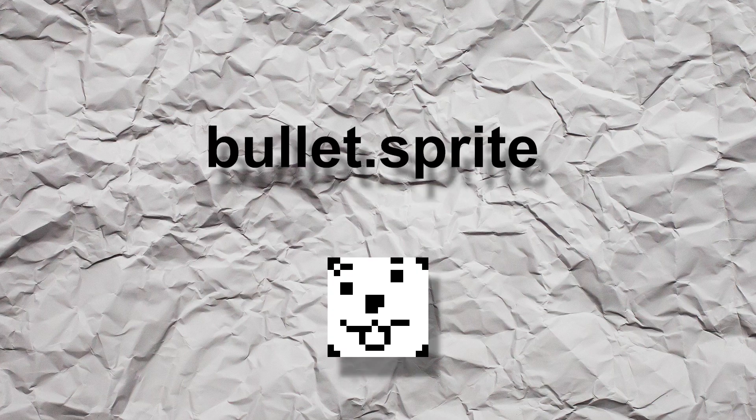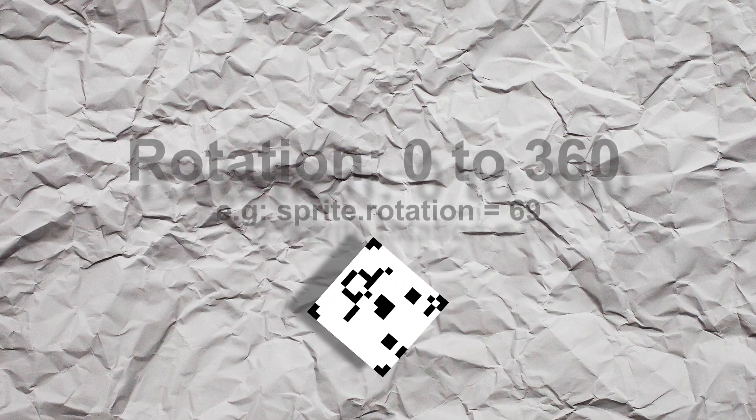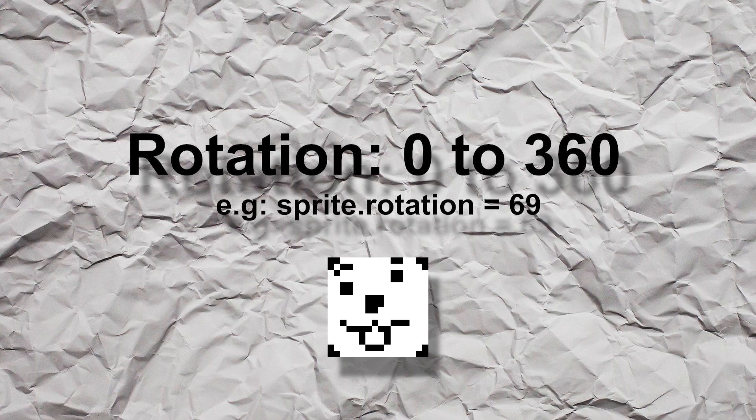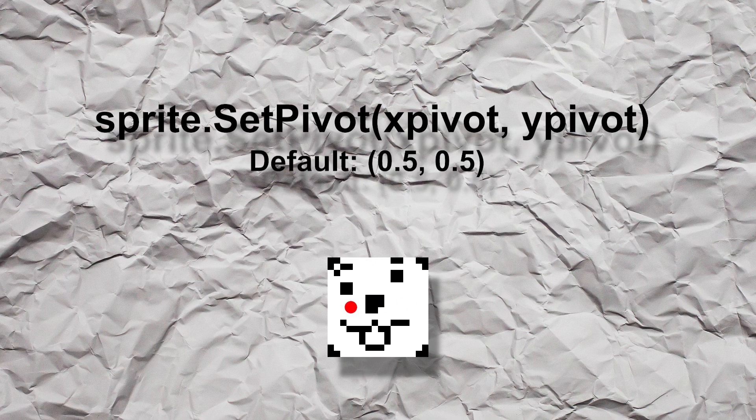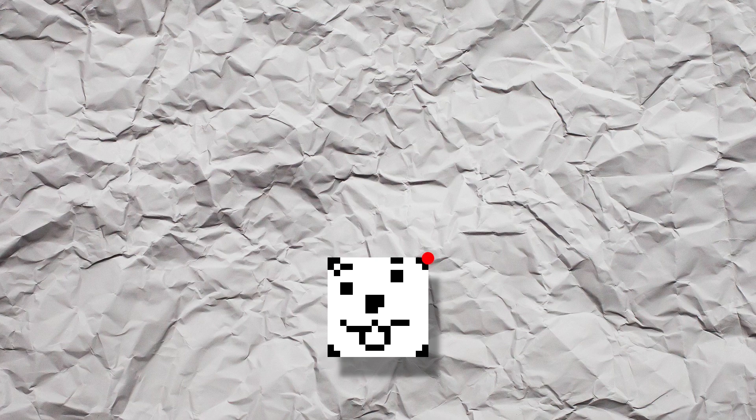Aside from changing the location of a bullet, you can also rotate and scale it. Rotation and scale are set using the bullet sprite, which you can access using bullet.sprite. The rotation of a sprite is in degrees and is clamped between 0 and 360, so 365 becomes 5, for instance. The rotation is counterclockwise and happens around the pivot point, which is at the center of the bullet by default. You can change the pivot by using the function setPivot. xPivot controls the horizontal location and yPivot controls the vertical location. A pivot of 0,0 is in the bottom left corner and 1,1 is in the top right corner of the bullet.